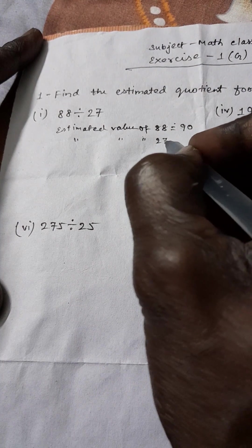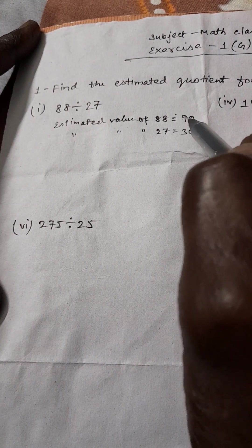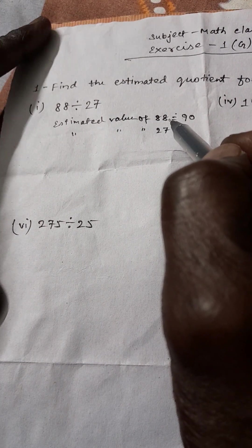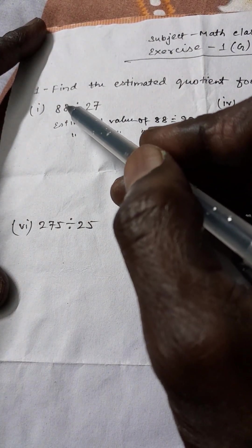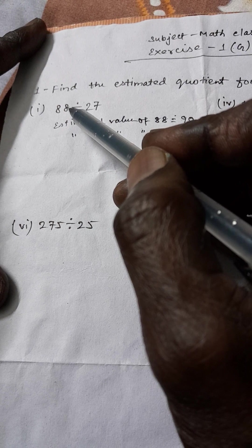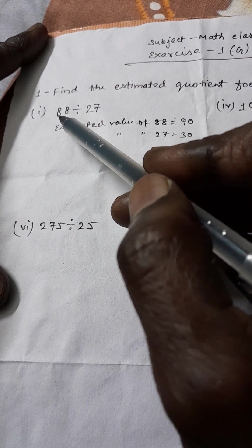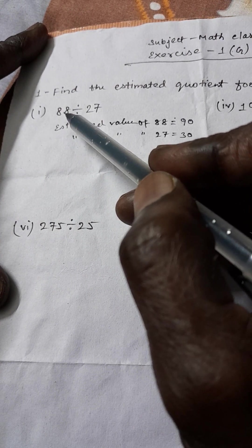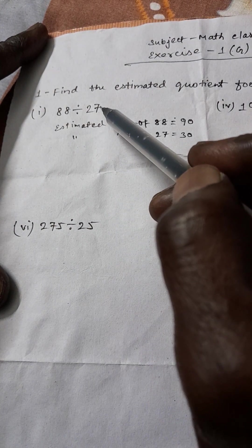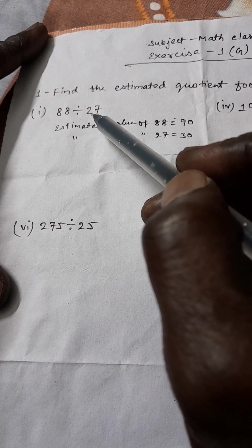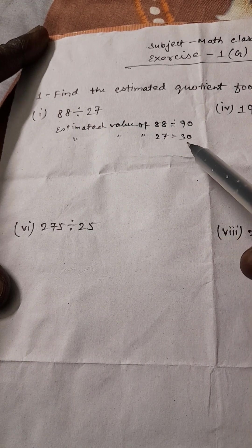The estimated value of 27 is 30. As I told you in chapter 1E and F, in estimated value, if the value in the unit place is more than 5, then we will increase the value of the 10th place by 1. So for 88, the unit digit 8 is more than 5, so we increase the 10th place by 1, giving us 90. Similarly, 7 in 27 is more than 5, so it becomes 30.